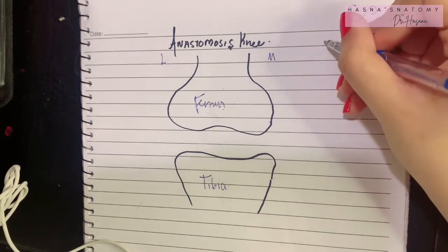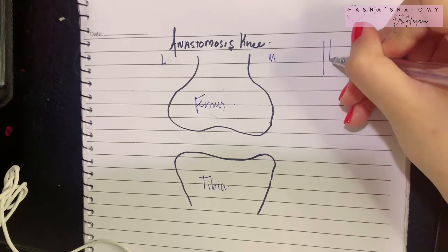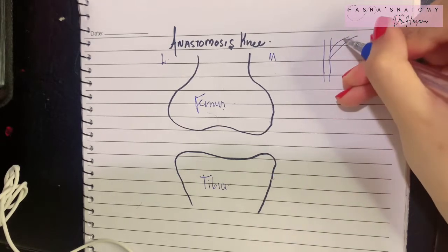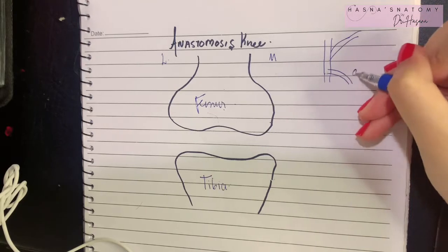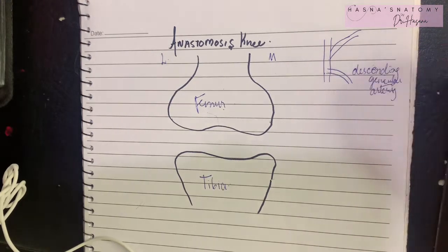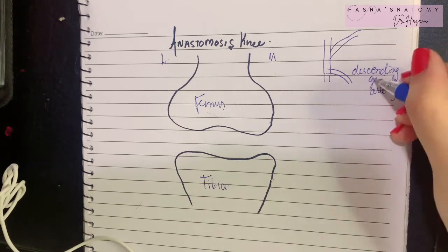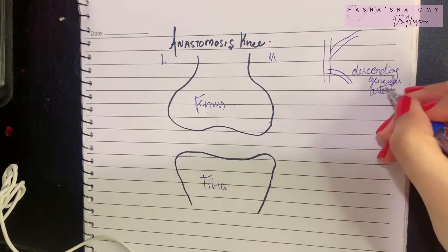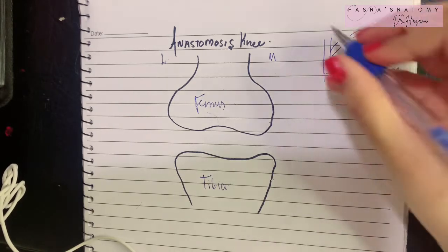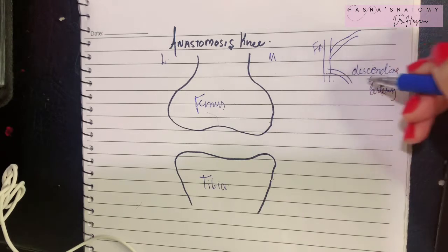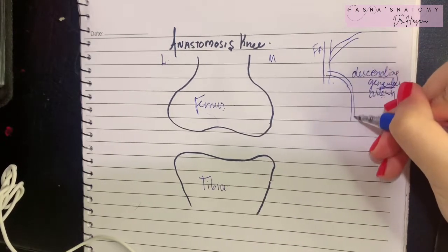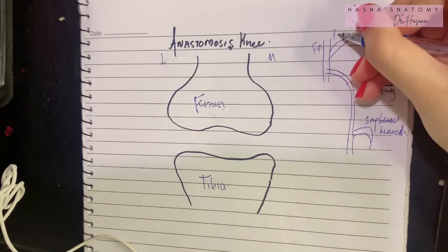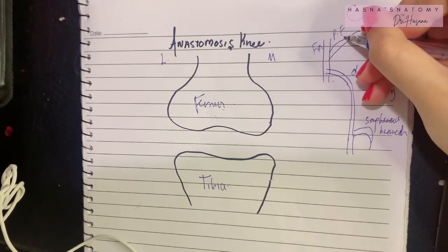We'll talk about the arteries. The anterior compartment's main vessel was the femoral artery. The femoral artery gave the profunda femoris artery, and it also gave a branch called the descending genicular artery. Wherever the word 'genicular' is mentioned, it means it is related to the knee joint. The descending genicular branch also gives another branch called the saphenous branch.